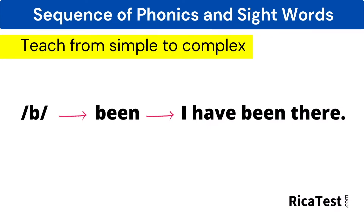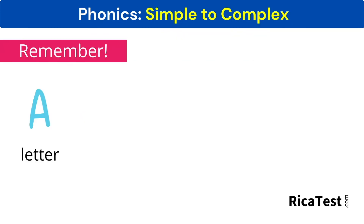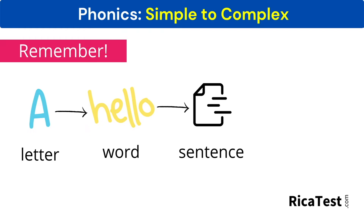Letter-to-sound correspondences need to be taught beginning with consonant sounds, which are the most simple linguistic units, moving next to irregular sounds, which are more complex linguistic units. Remember that students start by sounding out one letter at a time. Eventually, they move to recognizing words, then sentences, and then whole passages.